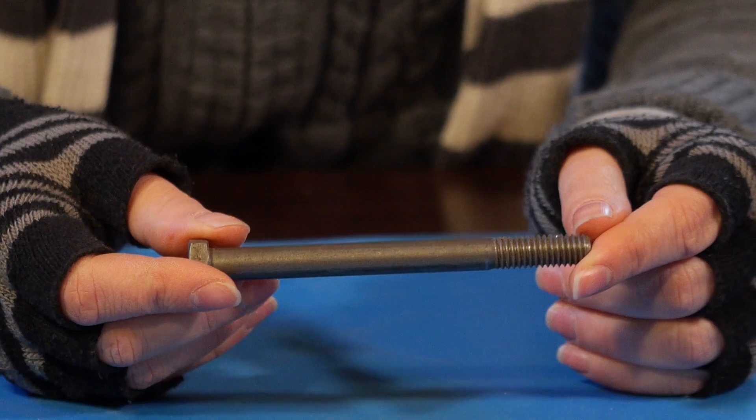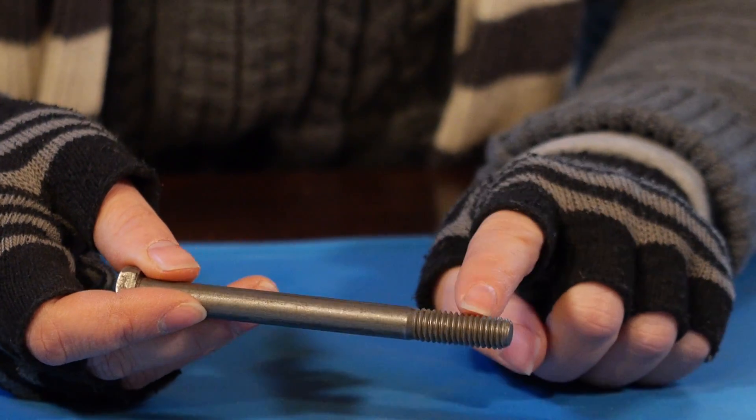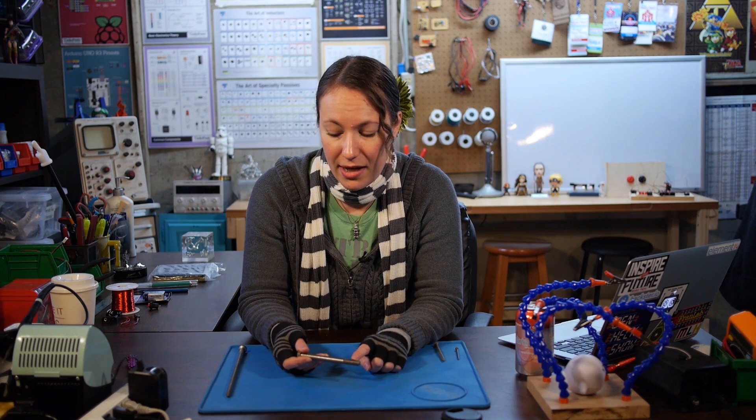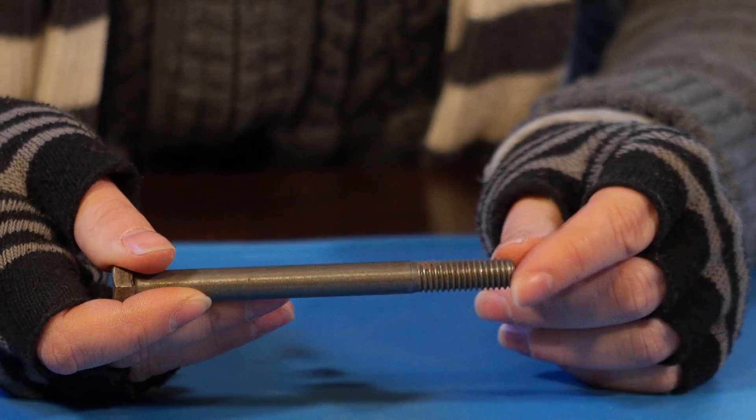You could use a bolt for the core of your electromagnet, but because of the threads, you're not going to be able to get the wire turns as close together as you could on just a nail. So ideally, you really want to use something with a smooth shaft.